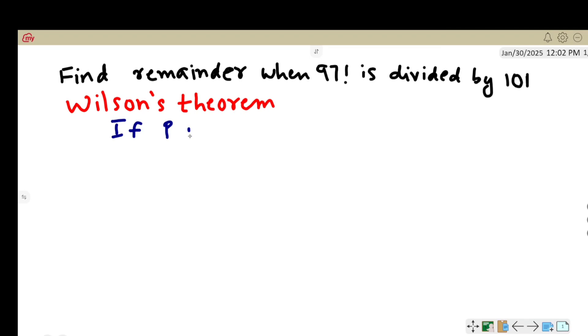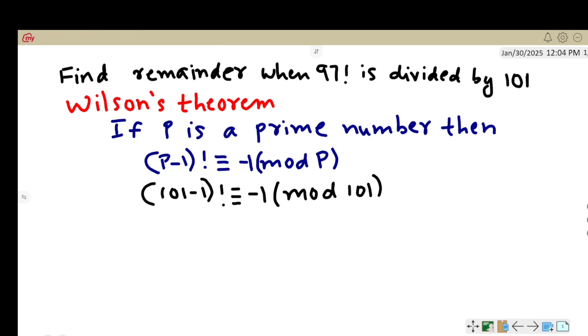Wilson's theorem states that if p is a prime number, then p minus 1 factorial is congruent to minus 1 mod p. Here p is 101, so we get 101 minus 1 factorial congruent to minus 1 mod 101. That's 100 factorial congruent to minus 1 mod 101.